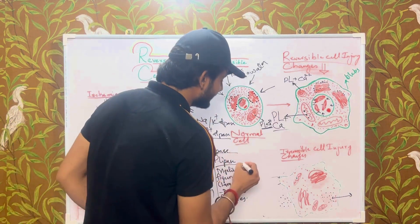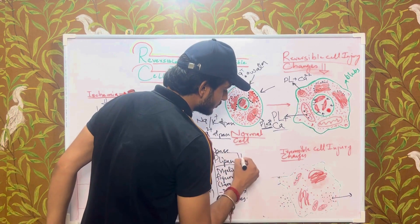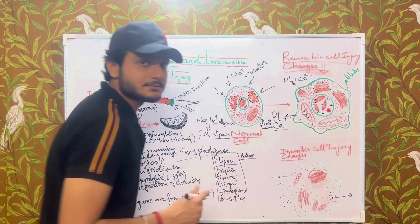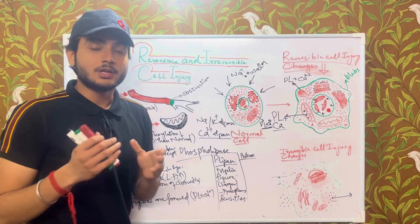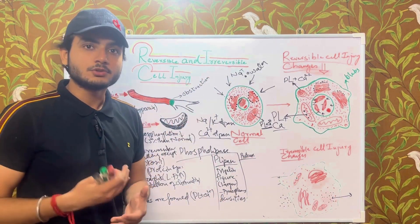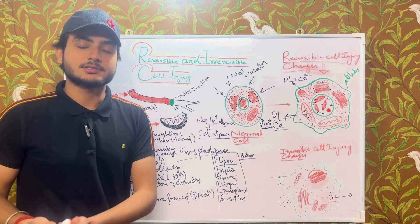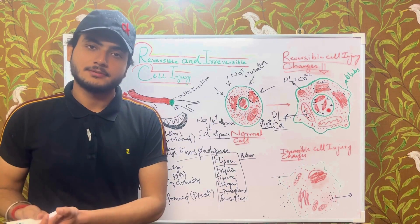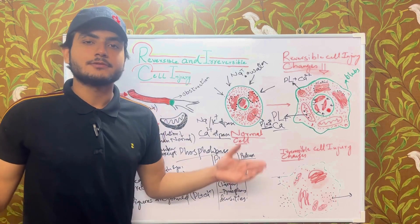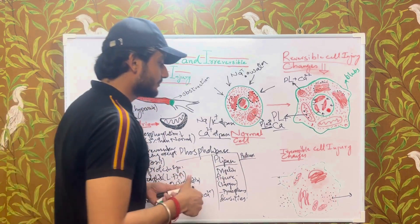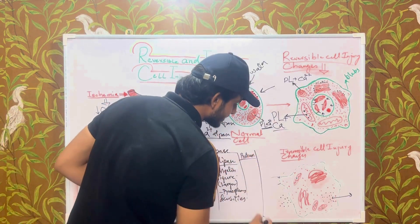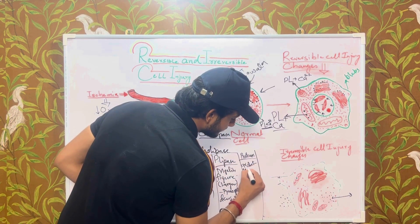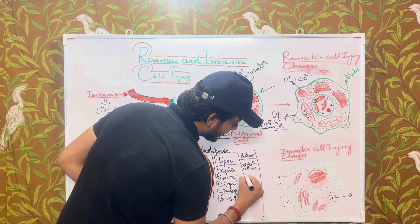Calcium also activates another group of enzymes known as proteases. These proteases start degrading cellular proteins, thereby causing the loss of the cell's structural framework. So the architecture of the cell is now lost because of this activation of proteases.